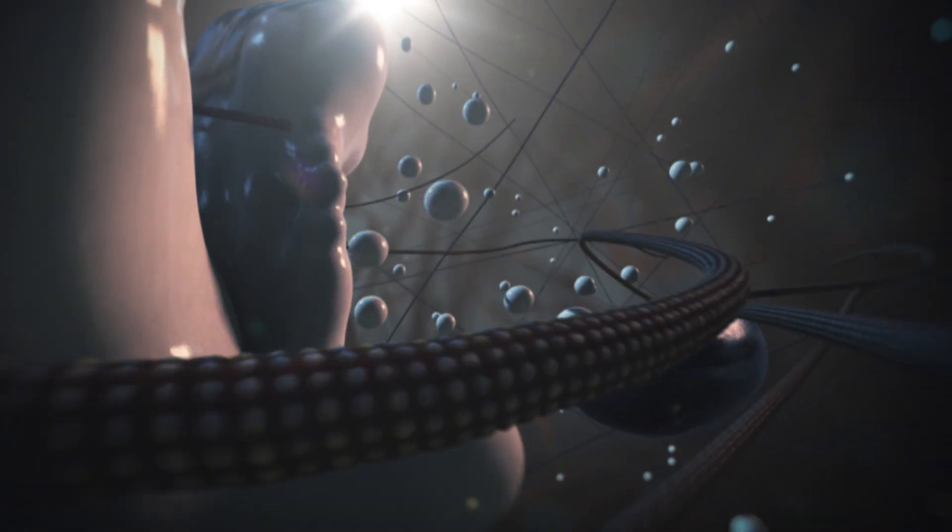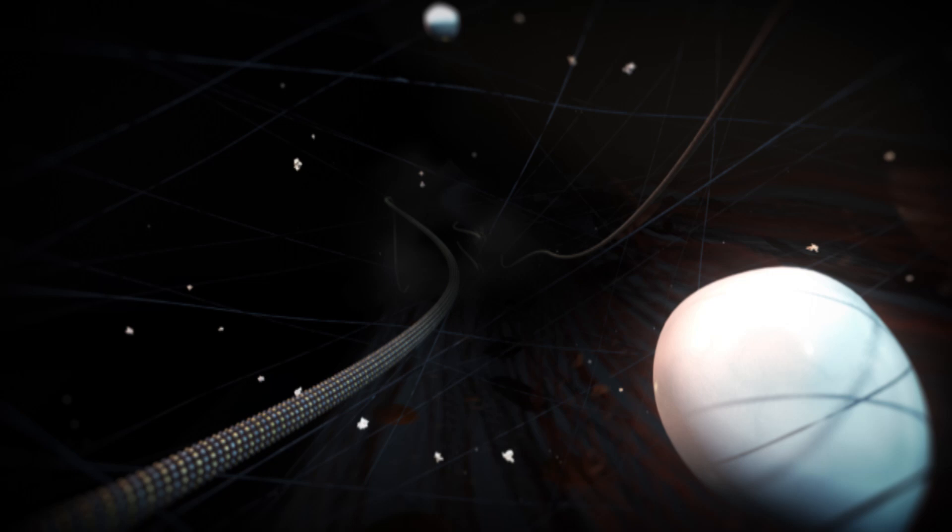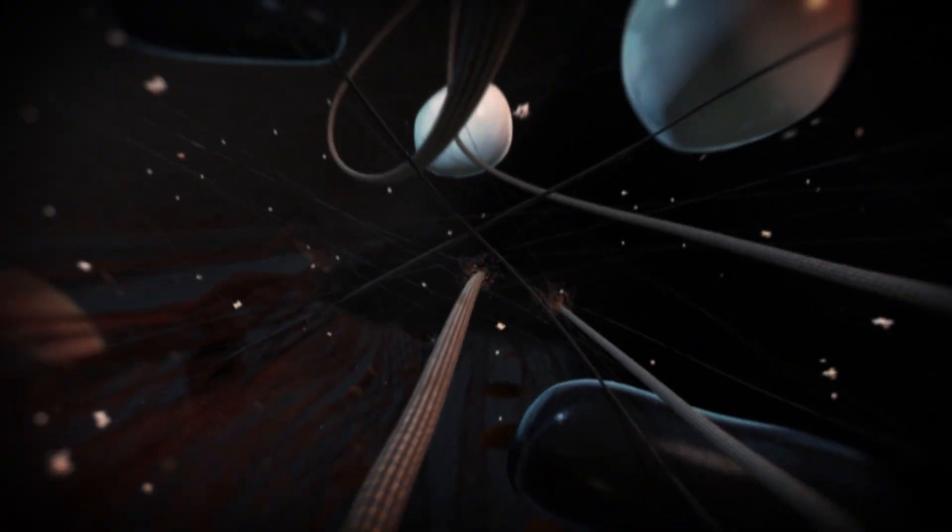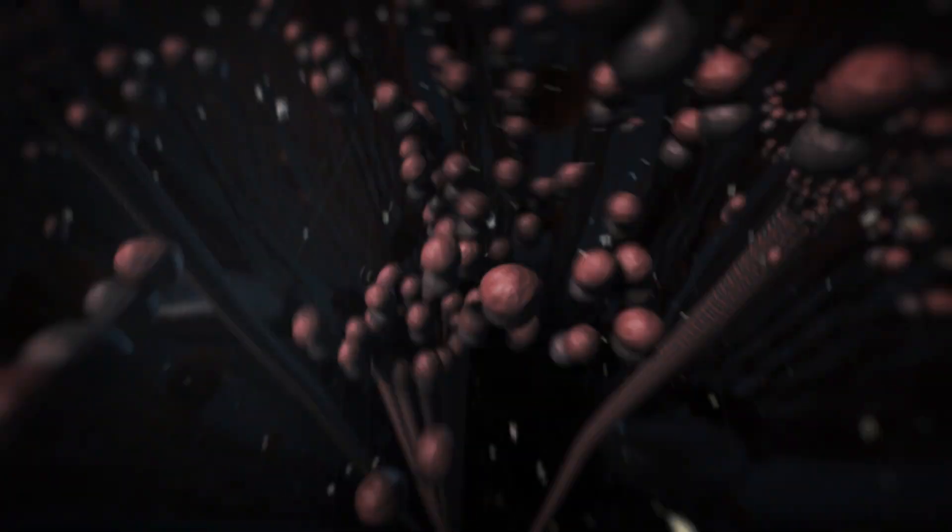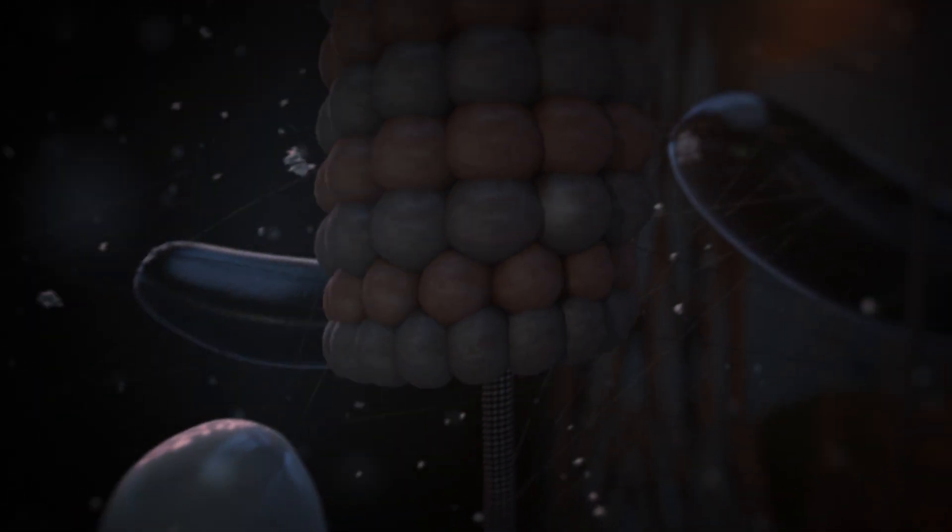The microtubule cytoskeleton is important for this polarized cargo transport since it provides the roads for molecular motors. Microtubules built up from tubulin subunits are dynamic structures, with a fast-growing and shrinking plus-end, and a more stable minus-end.